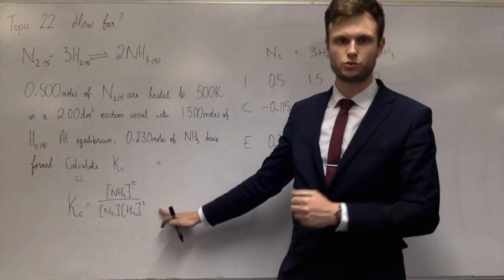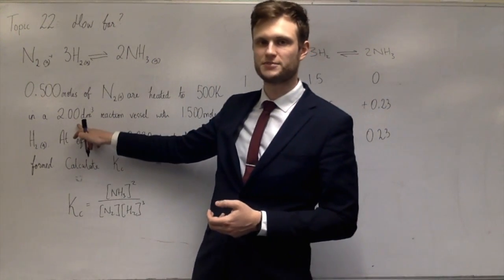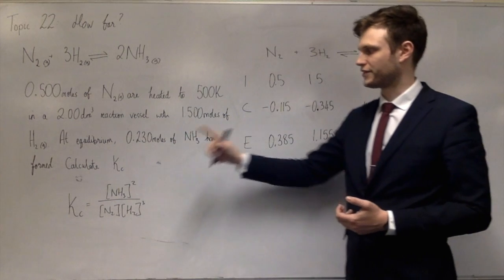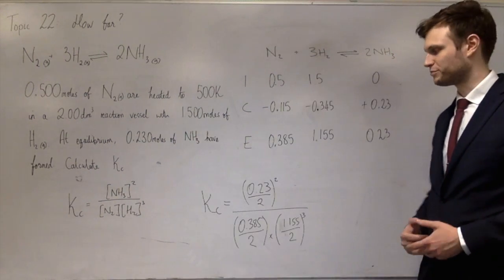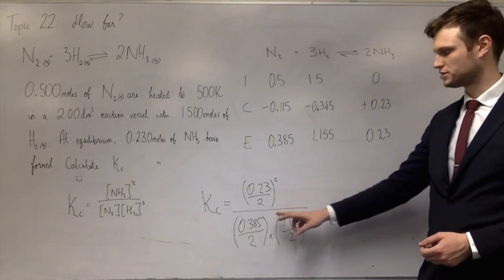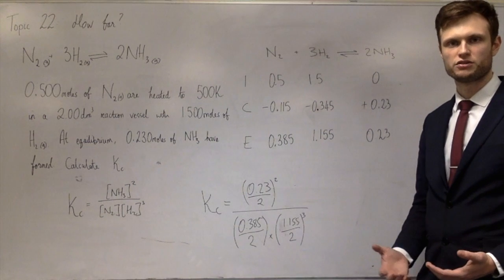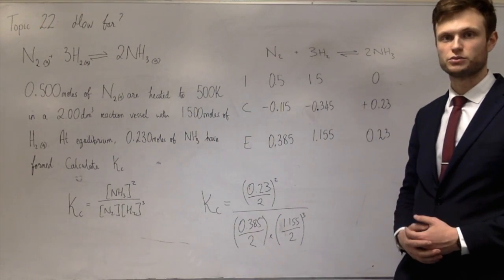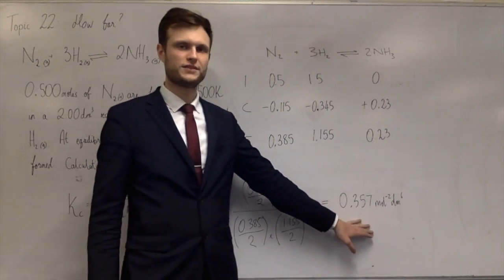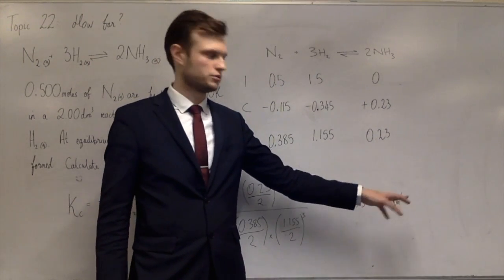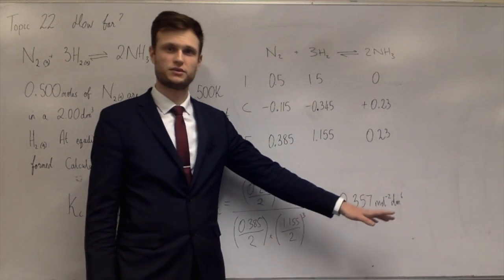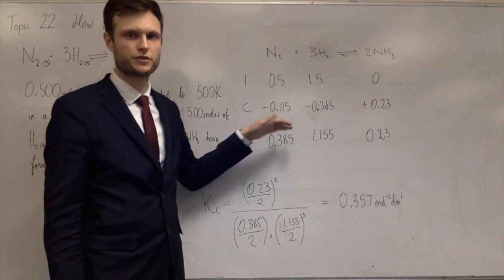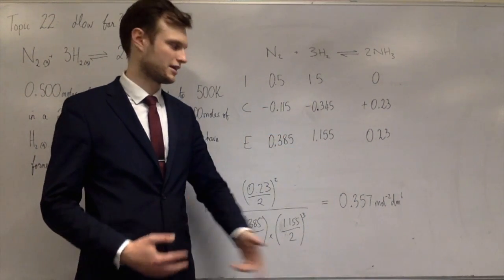The KC expression requires equilibrium concentrations. In a two decimetre cubed vessel, we divide each equilibrium amount by two. Substituting into the expression gives KC = 0.357 mol⁻² dm⁶. It's less than one, meaning more reactants than products, which makes sense because less than half the reactants were used.